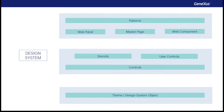And this is how the controls are designed — through classes whose properties are defined in the theme or design system object. So far, we've only discussed how to develop web applications. However, almost the same will apply to native mobile applications or even Angular applications. At the time this video was made, the latest upgrade of GeneXus 17 was number 7. There, the default style object is still the theme, but in future upgrades, it will be changed to the design system object.